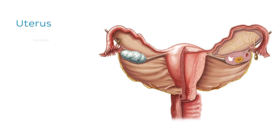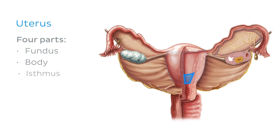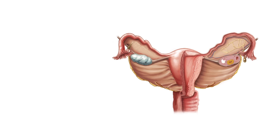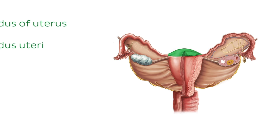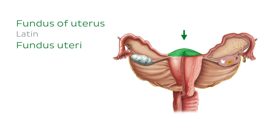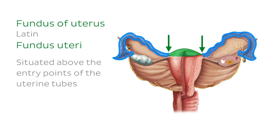The uterus can be divided into four key parts: the fundus, the body, the isthmus, and the cervix. Let's move on to look at these in more detail, starting with the fundus. As you can see here, the fundus is at the top of the uterus, and is situated above the entry points of the uterine tubes.